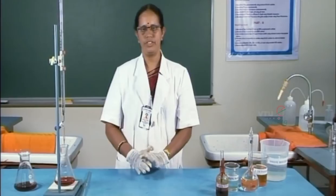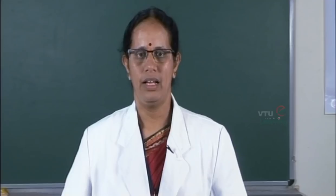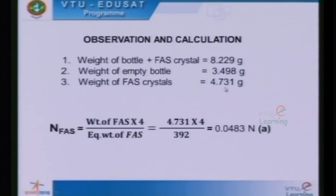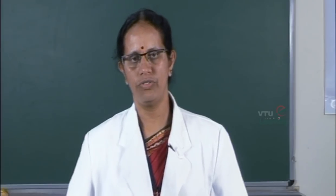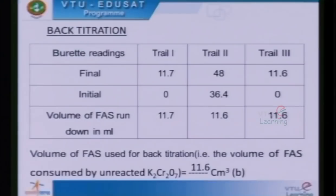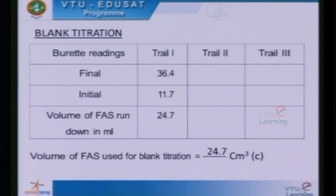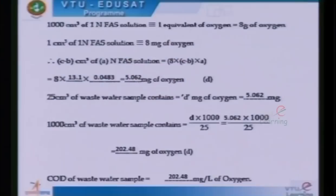Similarly, two more titrations are conducted for the concordance. The observations and calculations of the experiment: the amount of FAS crystals transferred to prepare the standard solution is 4.731 grams. Normality of FAS solution is 0.0483 N. The volume of FAS used for back titration — that is, the volume consumed by unreacted potassium dichromate — is 11.6 ml. The blank titration value is 24.7 ml. The COD of the wastewater sample is found to be 202.48 milligrams per litre of oxygen.